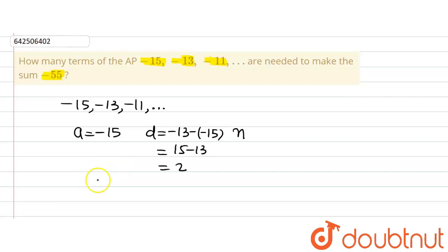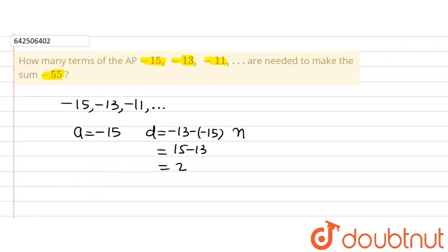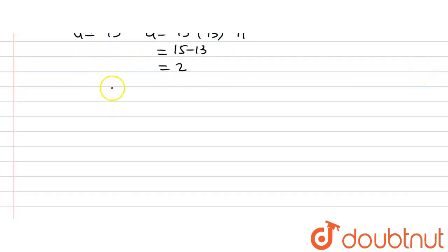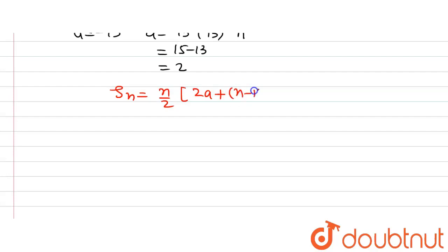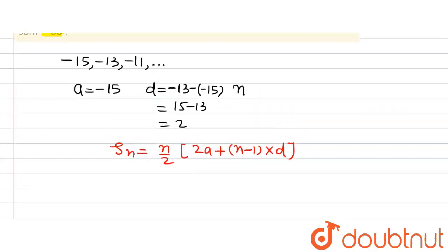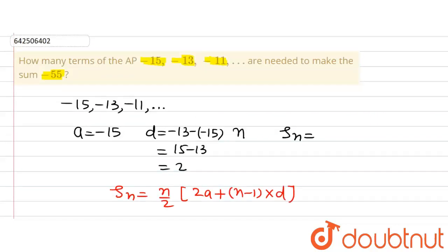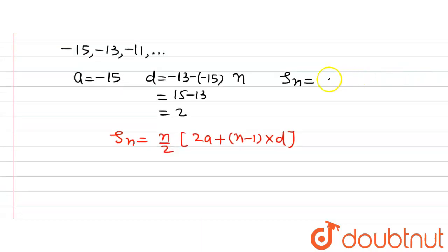The formula we are going to use is the sum of n terms of an AP, denoted by S_n, which equals n divided by 2, multiplied by 2A plus n minus 1 multiplied by d. Now putting in the values of A and d, we are given the sum already. The sum of n terms S_n is equal to minus 55.